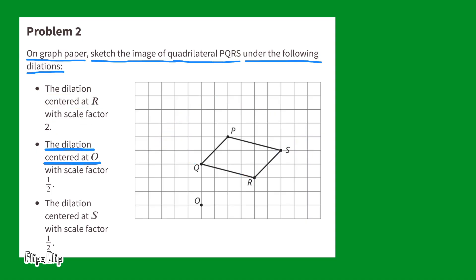The dilation centered at point O with a scale factor of one half. First, locate point O, and begin placing points that go halfway between point O and the other points. I'm putting the point halfway between point O and point Q. Now, I'm putting a point halfway between point O and point R.